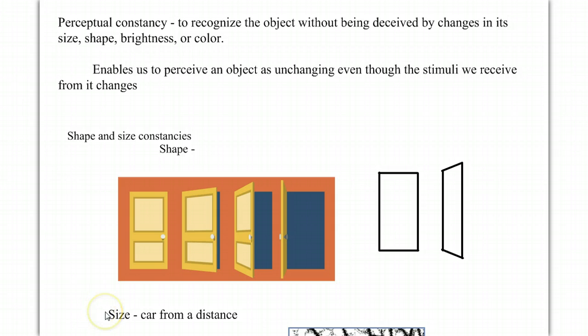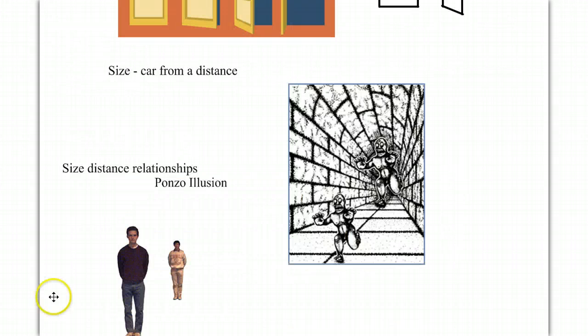How about another example? If you see a car approaching from the distance, the image on the back of your eye gets bigger and bigger and bigger. Yet, we don't sense the car is growing. Do you? If you do sense the car is growing, we have bigger things to talk about.